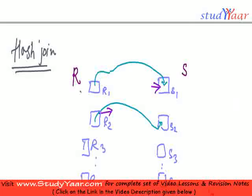The first step is to partition R into R1, R2 through R10, and partition S into S1, S2, S3 through Sn. So this is the first step.